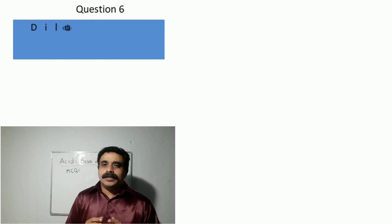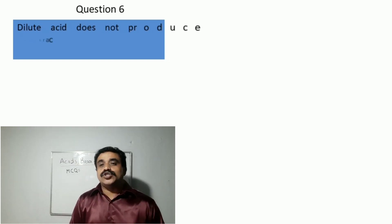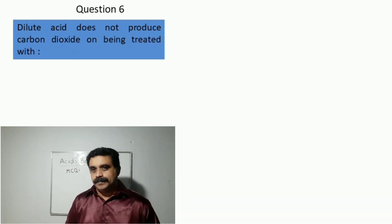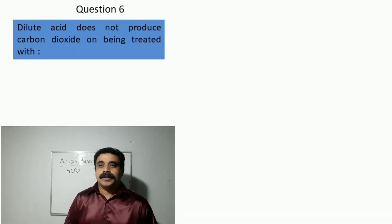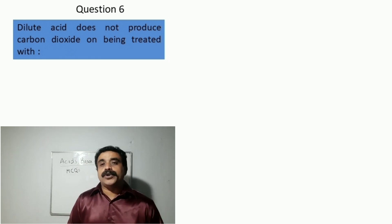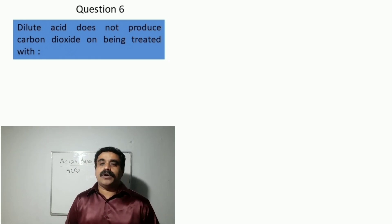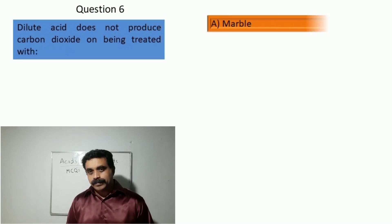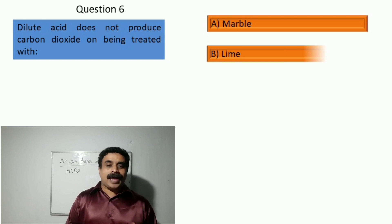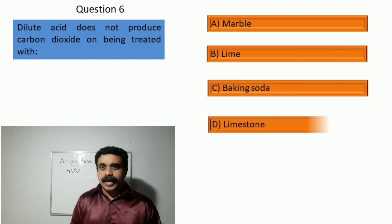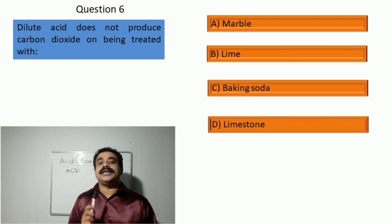Question number six: dilute acid does not produce carbon dioxide on being treated with — option A: marble, option B: lime, option C: baking soda, and option D: limestone.